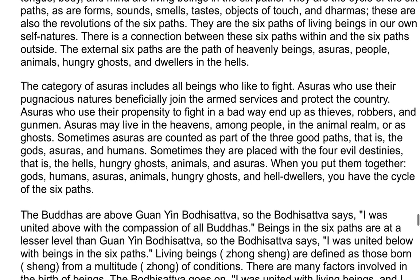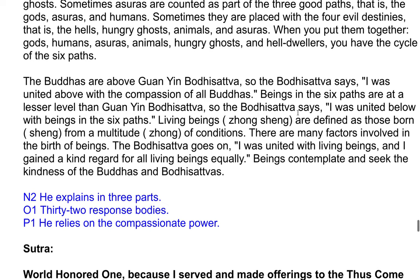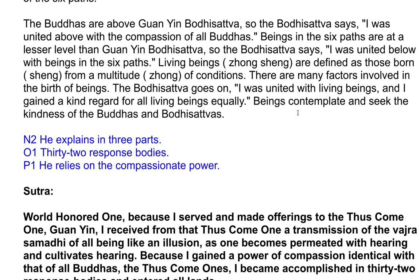The Buddhas are above Kuan Yin Bodhisattva, so the Bodhisattva says: I was united above with the compassion of all Buddhas. Beings in the six paths are at a lesser level than Kuan Yin Bodhisattva, so the Bodhisattva says: I was united below with beings in the six paths. Living beings, chung sheng, are defined as those born from a multitude of conditions. There are many factors involved in the birth of beings. The Bodhisattva goes on: I was united with living beings and I gained a kind regard for all living beings equally.